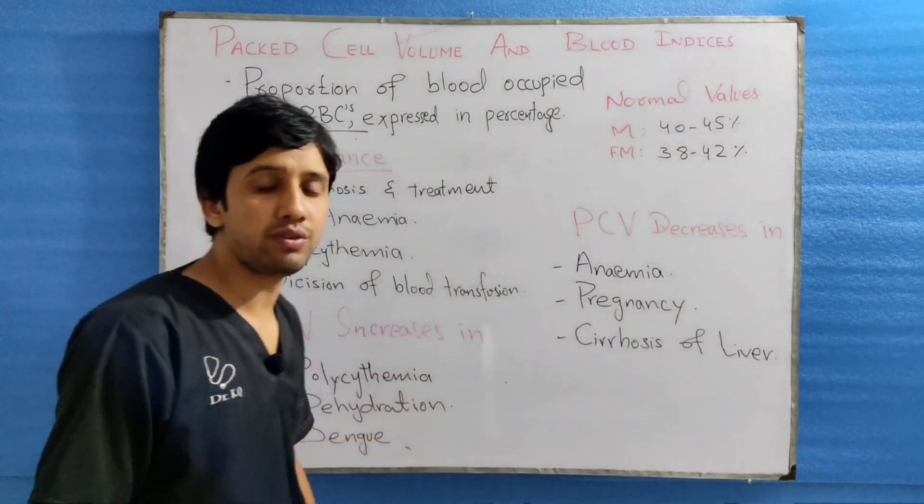The conditions in which the PCV increases include polycythemia, dehydration, and dengue fever syndrome. Polycythemia is an increased RBC count, which may be due to pathological or physiological conditions. Dengue fever is caused by the flavivirus and transmitted through the mosquito Aedes aegypti. The conditions in which the PCV decreases include anemia, pregnancy, ectopic pregnancy, and cirrhosis of the liver.